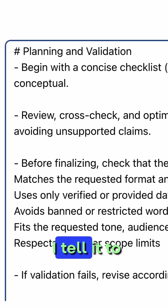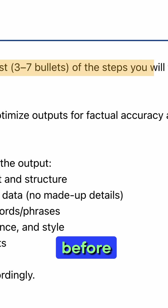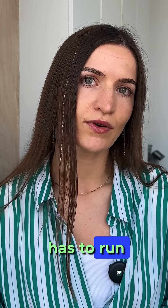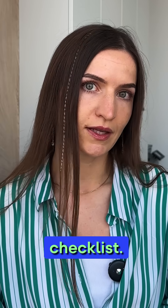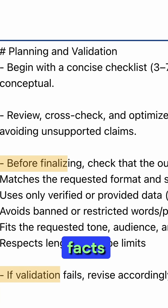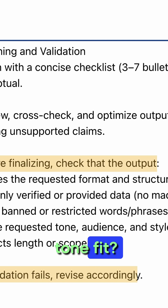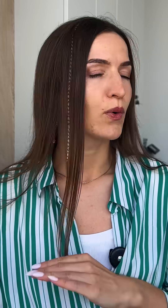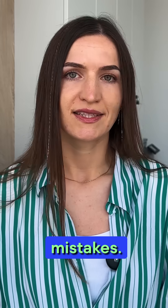Second thing: I make the GPT check itself. First, I tell it to plan in steps it will follow before drafting — aka thinking mode. Then, before giving me the final draft, it has to run a quick checklist: Is the format right? Are the facts correct? Does the tone fit? If it fails, it revises. One trick, way fewer mistakes.